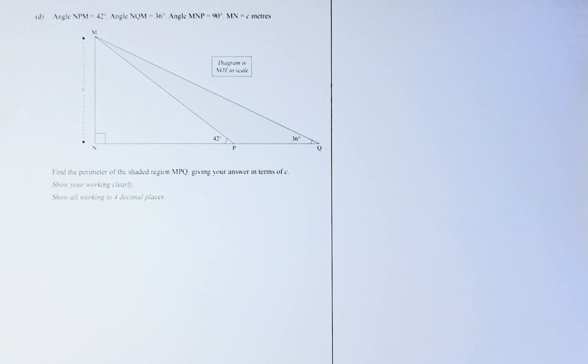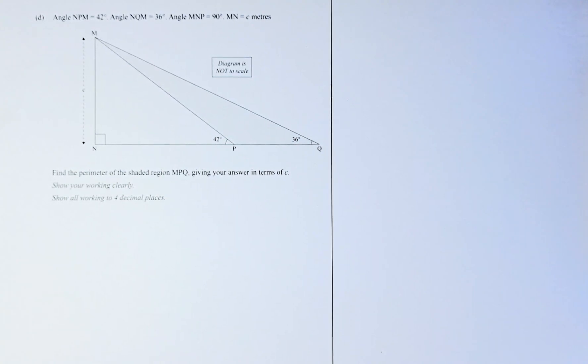So there are two right angle triangles. Triangle MNP, which is the white triangle, and also triangle MNQ, which is made up of the white and the shaded region — the bigger triangle.